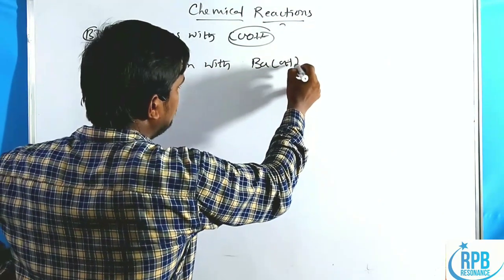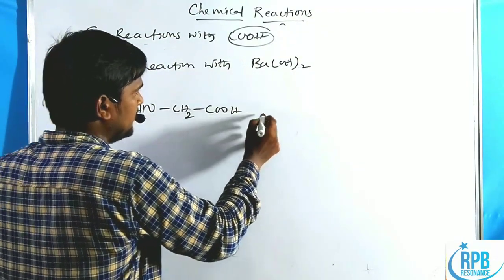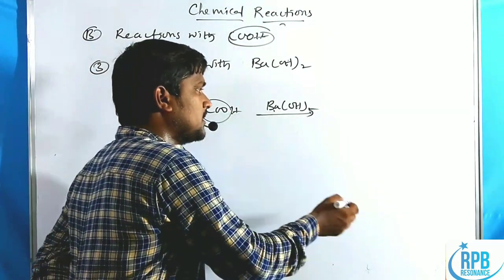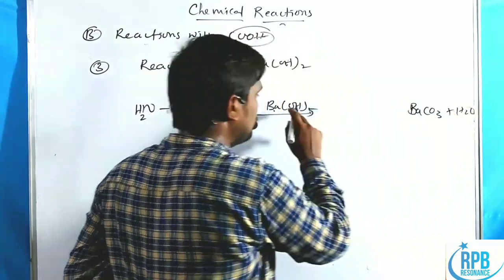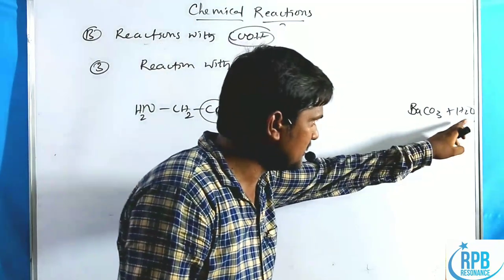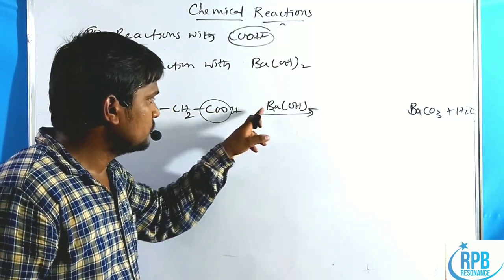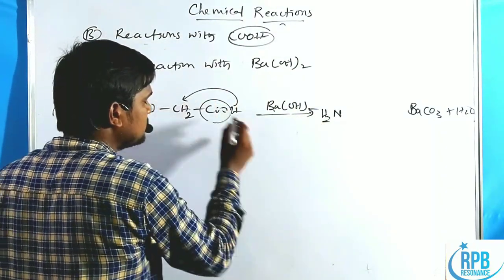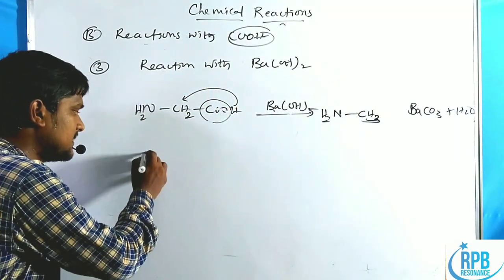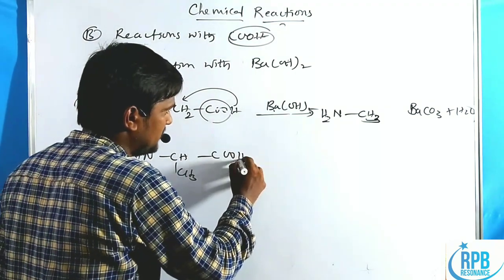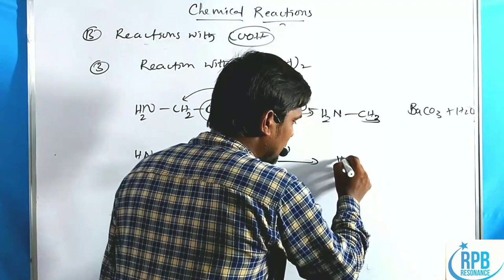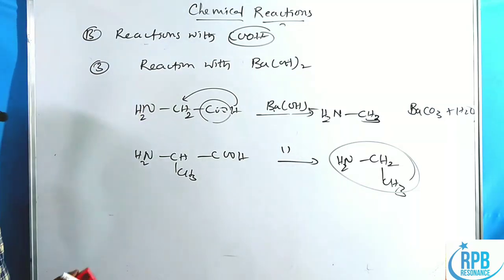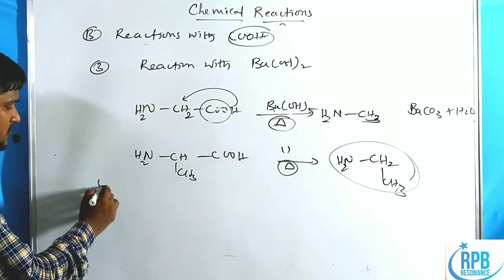The third reaction with COOH is treatment with barium dihydroxide (Ba(OH)2). Glycine reacts with Ba(OH)2, CO2 is eliminated along with BaCO3 and water. The remaining carbon gets hydrogen shifted, so COOH is lost as CO2. For example, alanine (NH2-CHCH3-COOH) treated with Ba(OH)2 gives ethylamine (NH2-CH2-CH3), and glycine gives methylamine. Heating conditions are used.